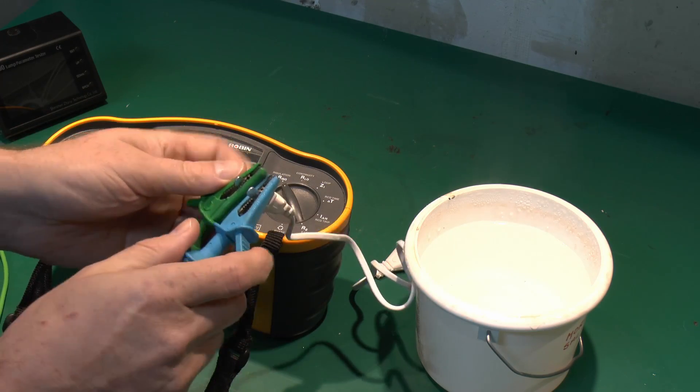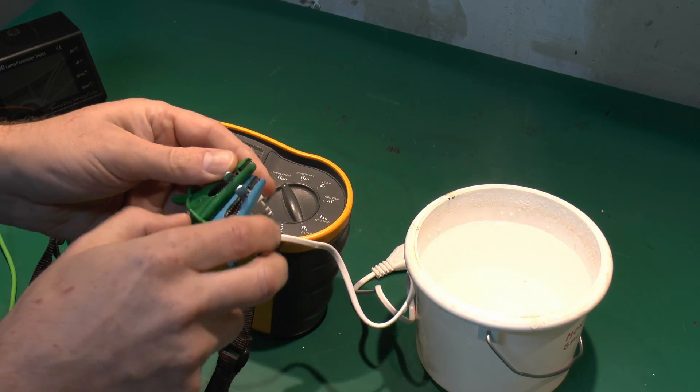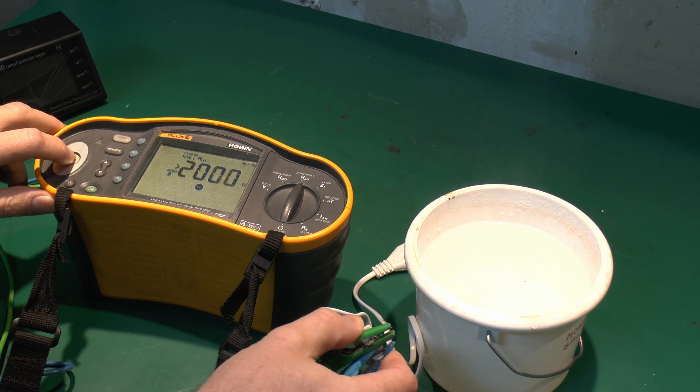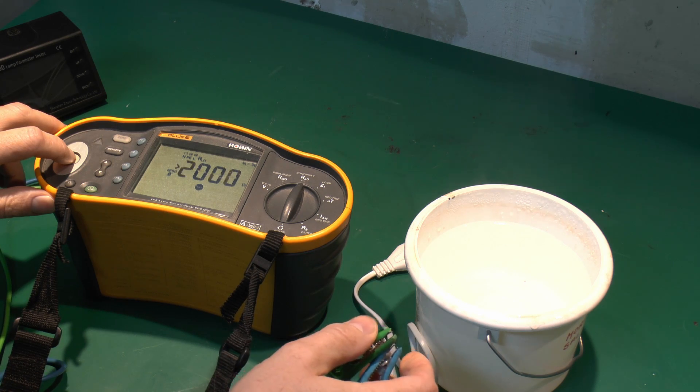Let's just check the resistance between the two prongs there. Again that should be pretty much in the same area. Yeah, sort of 89. I've got to get onto the leads with these large probes here.